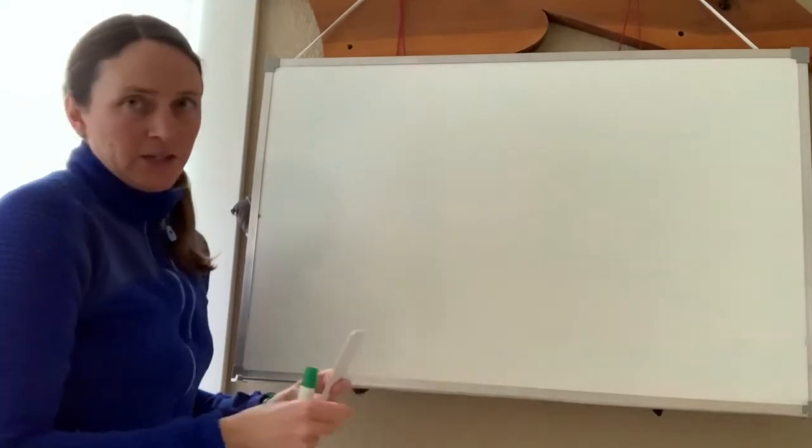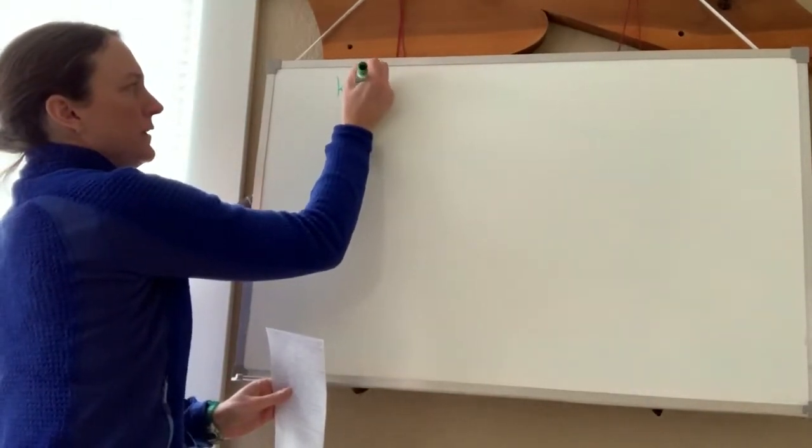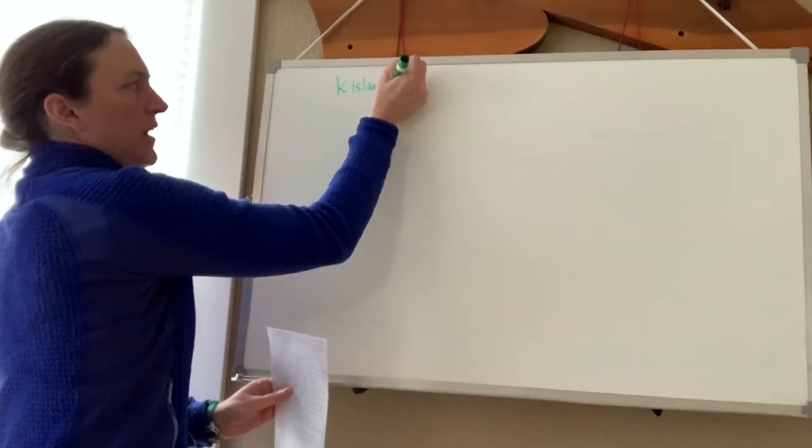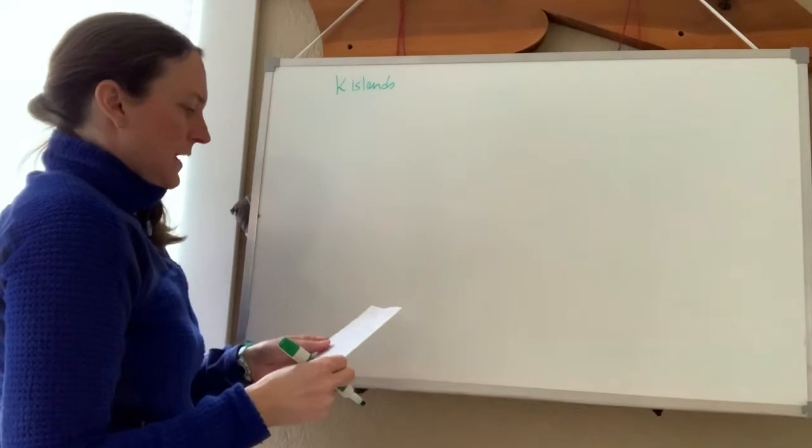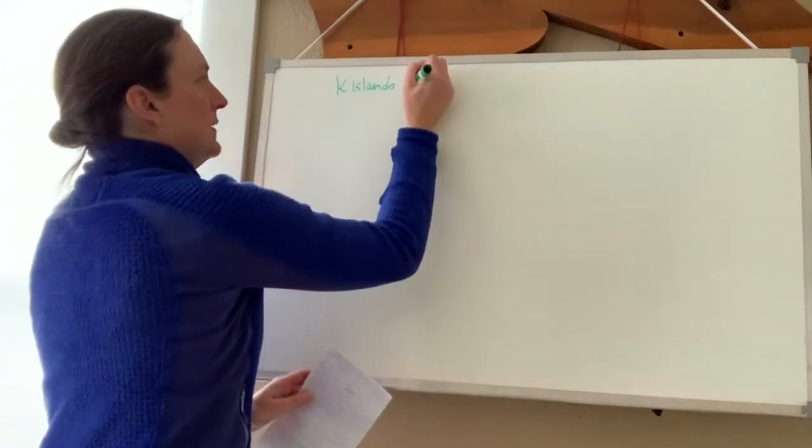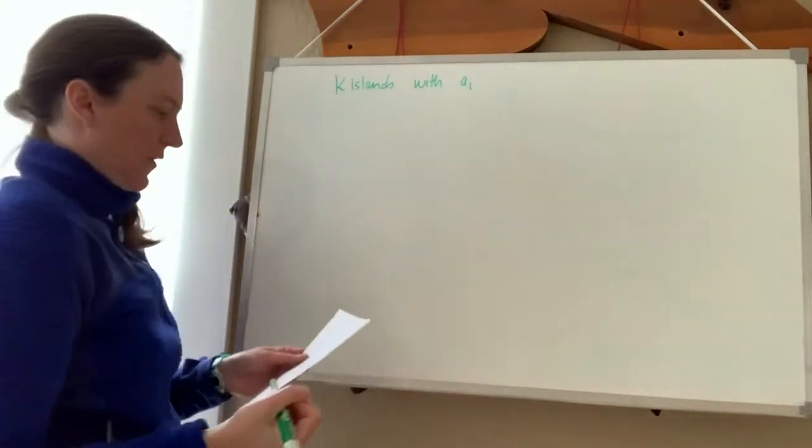So imagine we have k islands. K is the number of islands we have, and each one has an area a_i.